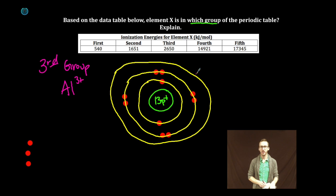Now here's why I know it's an element in the third group. Notice as I go from the third ionization energy to the fourth ionization energy, I have this huge jump of ionization energy.